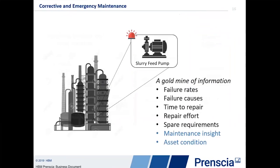That's a little bit about RCM and the planning process. Of course, in operation, it never goes according to plan. There will always be corrective and emergency maintenance that needs to be required. But even with corrective and emergency maintenance, we have a goldmine of information available to us in the work orders that are actually operated. We get basic information about failure rates just by looking at the relative occurrence of the work orders.